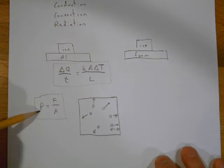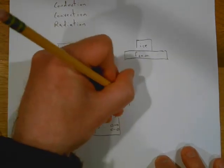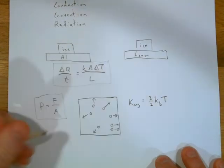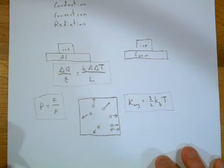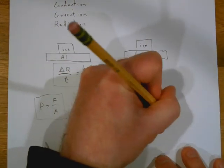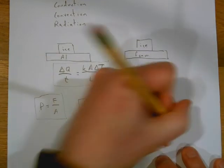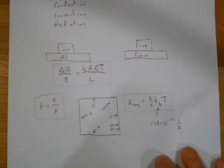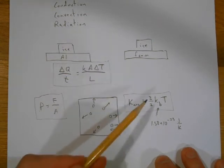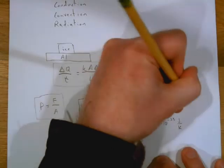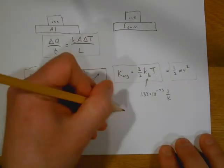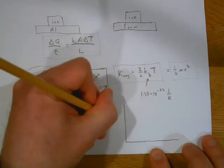This microscopic behavior — molecules moving around — affects the macroscopic quantity of pressure. The average kinetic energy of molecules is (3/2) k_B T, which is on your equation sheet. k_B is Boltzmann's constant: 1.38 × 10⁻²³ J/K. Remember to use Kelvin; to convert from Celsius, add 273. Kinetic energy also equals (1/2)mv².